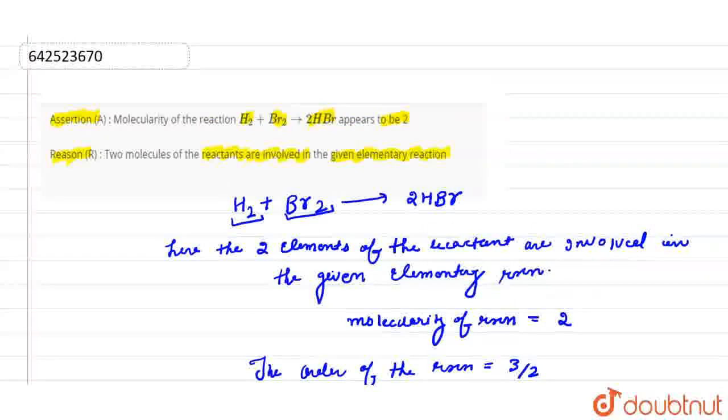So here we can see the assertion that molecularity of the reaction appears to be 2 is correct. And the reason, that two molecules of the reactant are involved in the given elementary reaction, is also correct. So both assertion and reason are correct and reason is the correct explanation of assertion. Thank you.